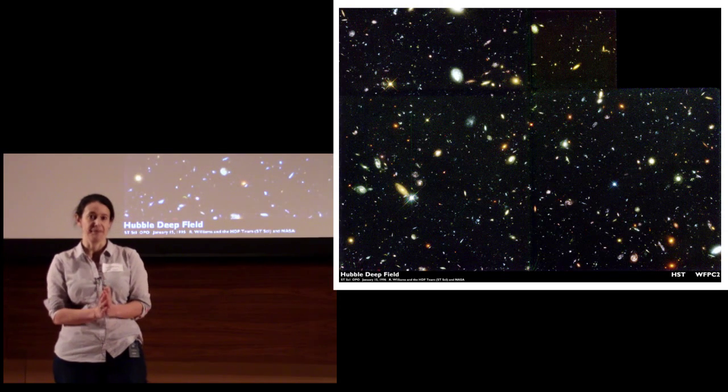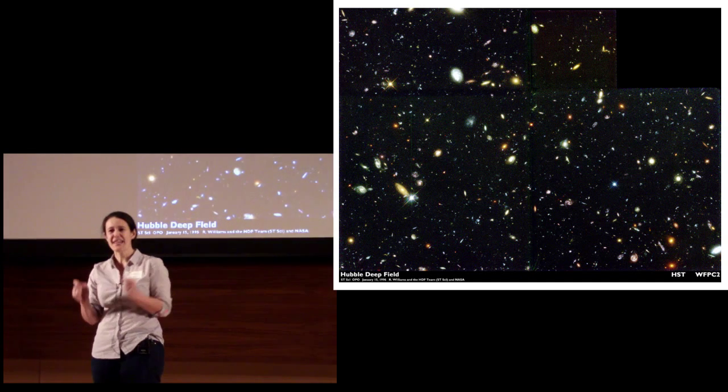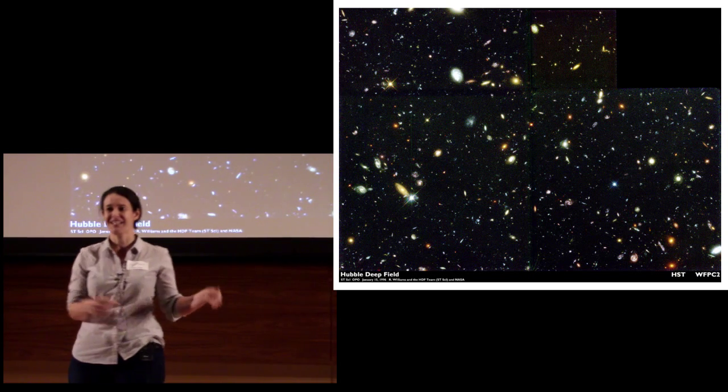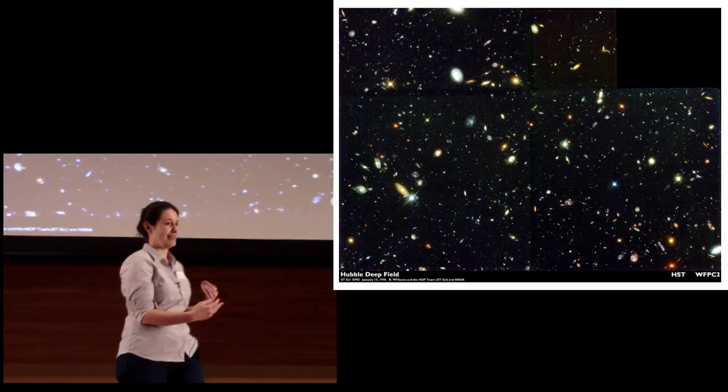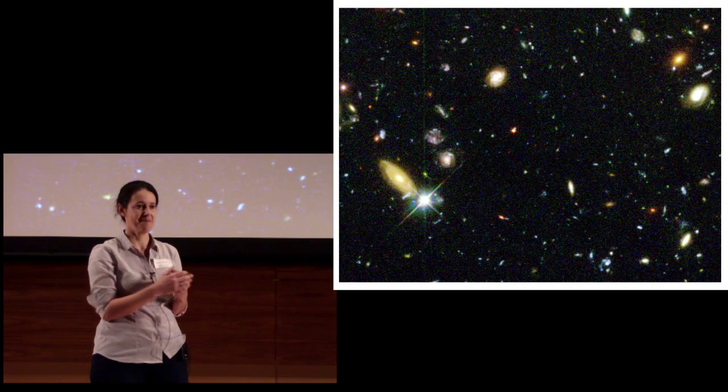And the image that we got after observing this blank piece of sky for 10 days was absolutely breathtaking. In this tiny piece of sky, we can see thousands of galaxies. Each of those galaxies, remember, is like our own Milky Way galaxy. It has billions of stars. Some of them may have planets around them.